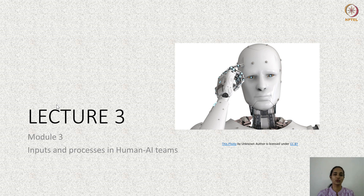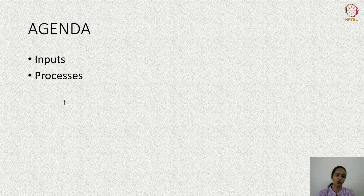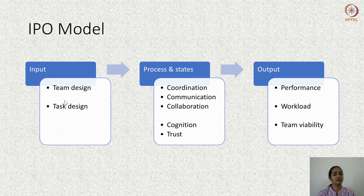The agenda for this lecture is to cover inputs and processes — that is, what are the factors which are important for team functioning in human-AI teams. To cover this, we will be using the input-process-output model. Researchers have found many factors which are important as inputs and processes; however, we will be looking only at a few factors which have been identified as critical for the functioning of human-AI teams.